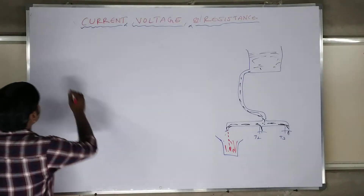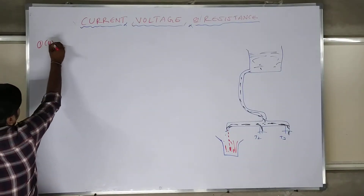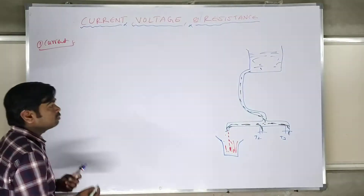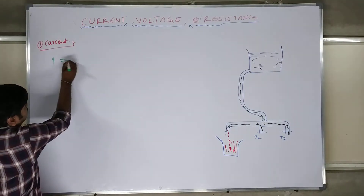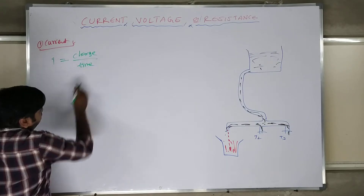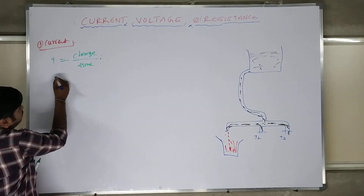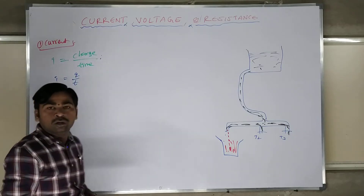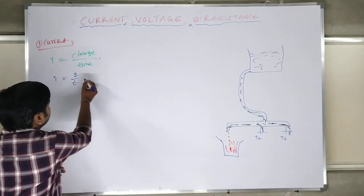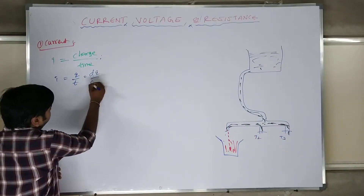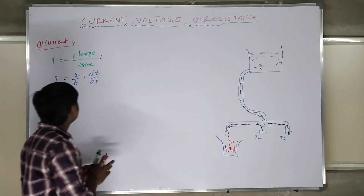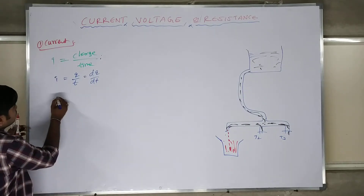Now let me connect this to your textbook definition. The current formula is I = Q/T, or rate of change of charge: I = dQ/dT. The total charge Q equals N times e, where N is the number of charge carriers and e is the charge of one electron, which is 1.6 × 10⁻¹⁹ coulombs.